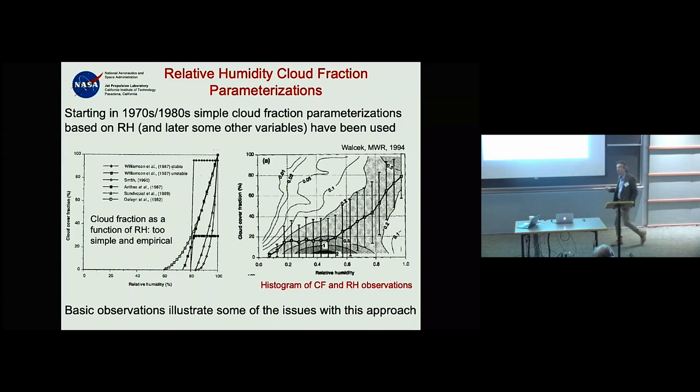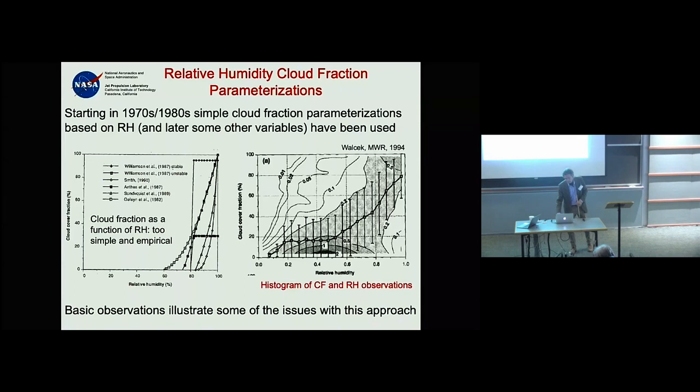One idea first discussed in the mid-1970s and published in 1977 — with a couple of earlier papers in 1975 — is using moist conserved variables. These variables are associated with a distribution inside the grid box.